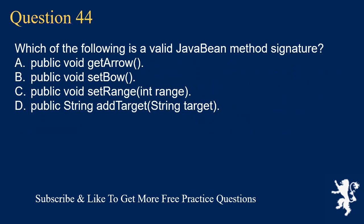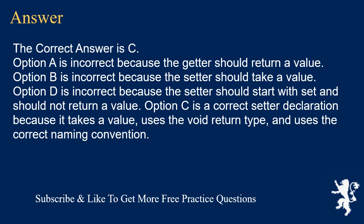Question 44. Which of the following is a valid Java bean method signature? A. public void getArrow(). B. public void setBow(). C. public void setRange(int range). D. public String addTarget(String target). The correct answer is C. Option A is incorrect because the getter should return a value. Option B is incorrect because the setter should take a value. Option D is incorrect because the setter should start with set and should not return a value. Option C is a correct setter declaration.